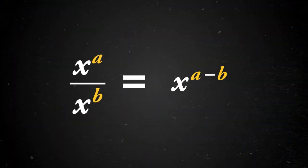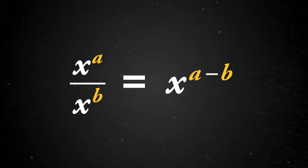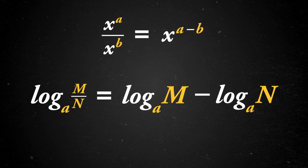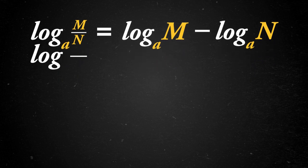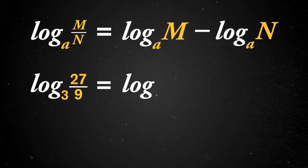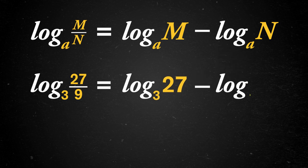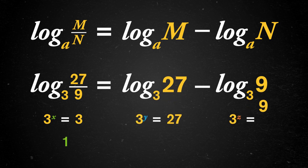And if we remember that x to the a divided by x to the b equals x to the a minus b, it's not that surprising to learn that we can turn division into subtraction like this. So, if we have log base 3 of 27 over 9, we can rewrite it as log base 3 of 27 minus log base 3 of 9. On the left, we're asking what power of 3 equals 3, which is just 1. On the right, we're asking what power of 3 is 27 minus what power of 3 is 9. 3 minus 2 also equals 1.